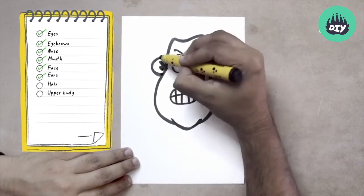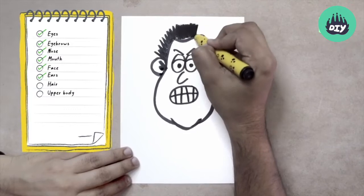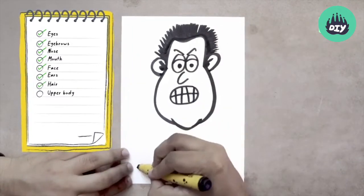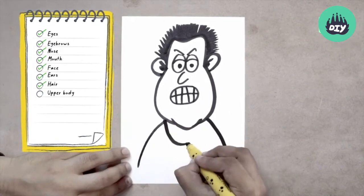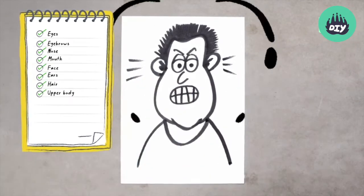Again, since the character is angry, we'll make the hair stand, a spike kind of hairstyle we can give this character. And we can also show some fumes coming out of the ears, like this.